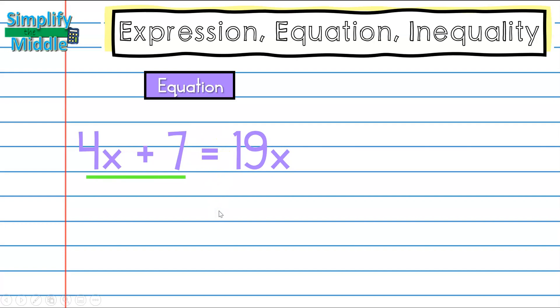Inside our equation we have 4x + 7 and we also have 19x. These are called expressions. An expression can be a combination of numbers and variables that has one or more operators.